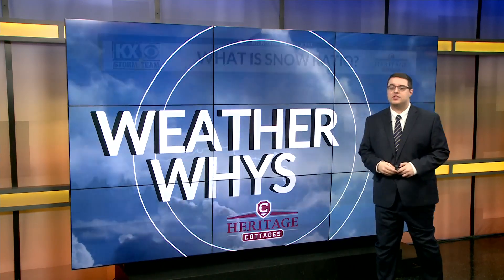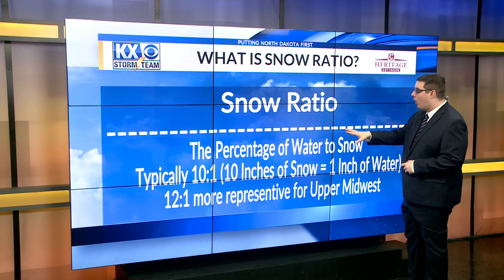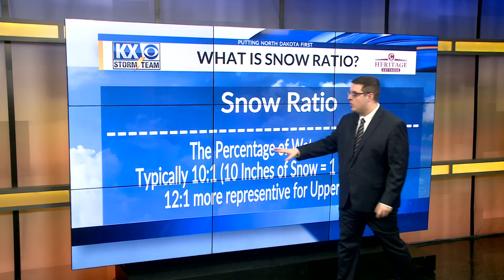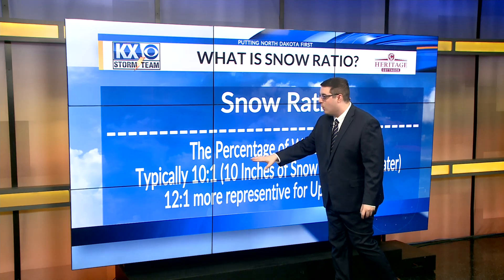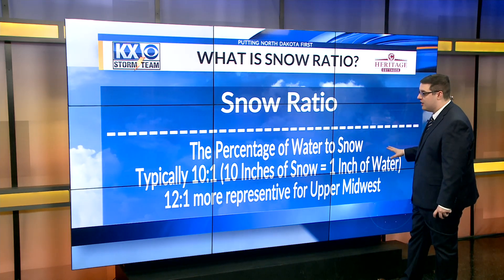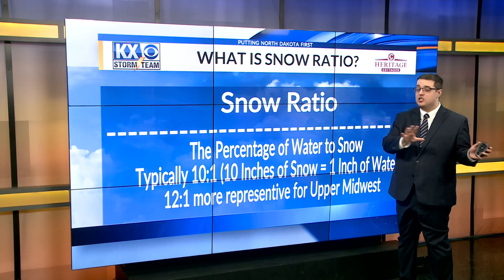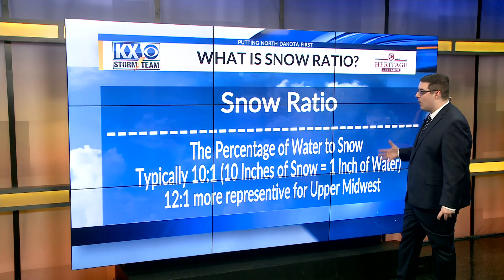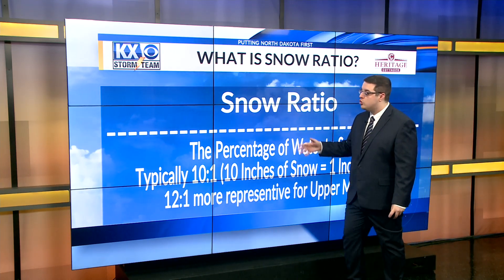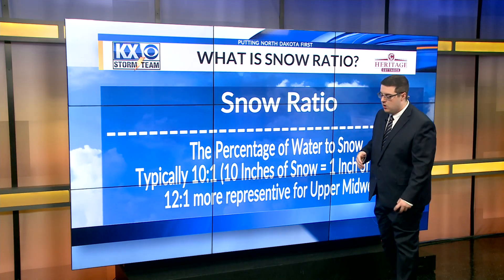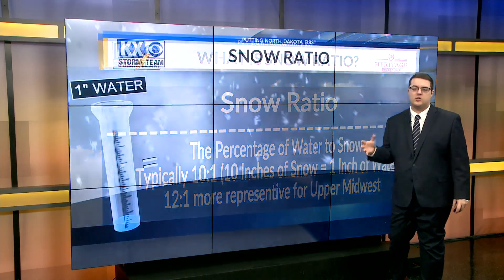So what is snow ratio? Snow ratio is usually seen as the percentage of water to snow, and on a typical system we look at a ratio of 10 to one. That's your average range, and what that tells us is we'll see 10 inches of snow for about one inch of water. Studies have shown that the upper Midwest may be more represented by a 12 to one ratio, so we sit normally in that 10 to one to 12 to one ratio for snowfalls.